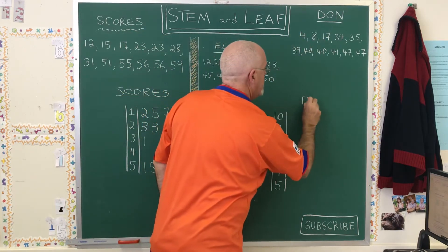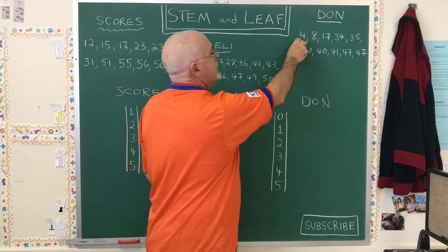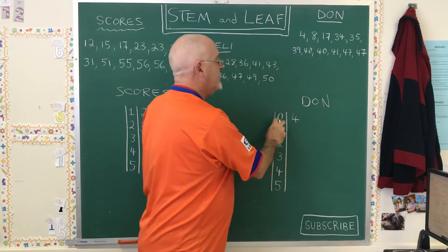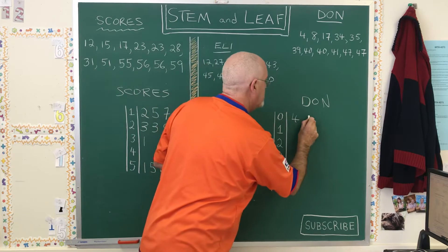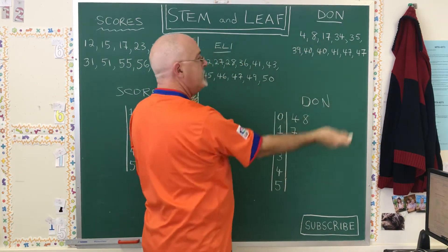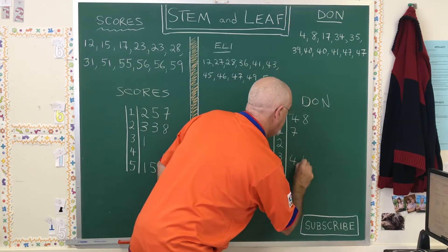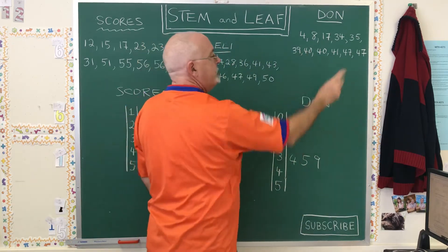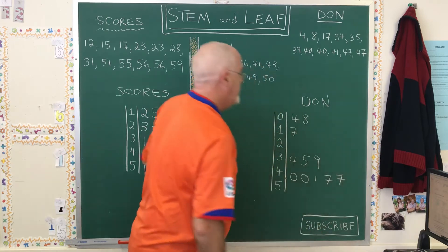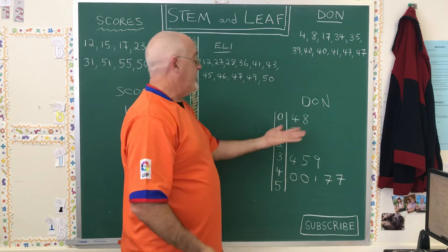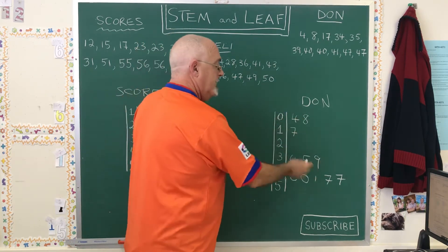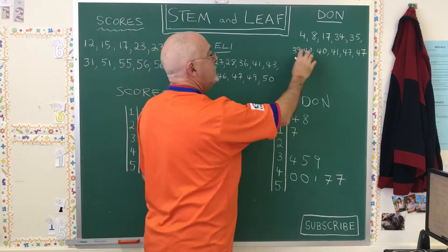I'm going to put Don on this side. His first number is a 4, which is not a two-digit number. That's why this time I had to put a 0 between the bars, so I can write a 4 next to it — 0, 4 means 4. We also have an 8. Then 17 is next. There are no numbers in the 20s. Then 34, 35, 39. And we have five values in the 40s: 40, a second 40, 41, and two 47s. Notice how I show the row even though I don't have any numbers in the 20s, and I'm showing a 5 row even though I don't have any numbers in the 50s. But I can read my data and get the same set of 11 numbers.